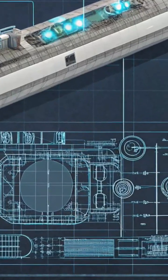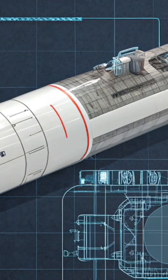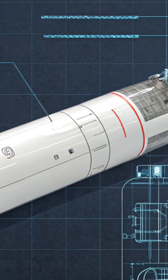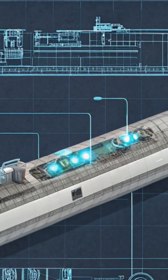Samne aap dekh rahi hain 2026 UGM-133 Trident II, jo America ka sabse powerful submarine-launched ballistic missile hai. Ye missile table ke beech mujood nakshay par aur peeche board par dono jagah dikhaya gaya hai.